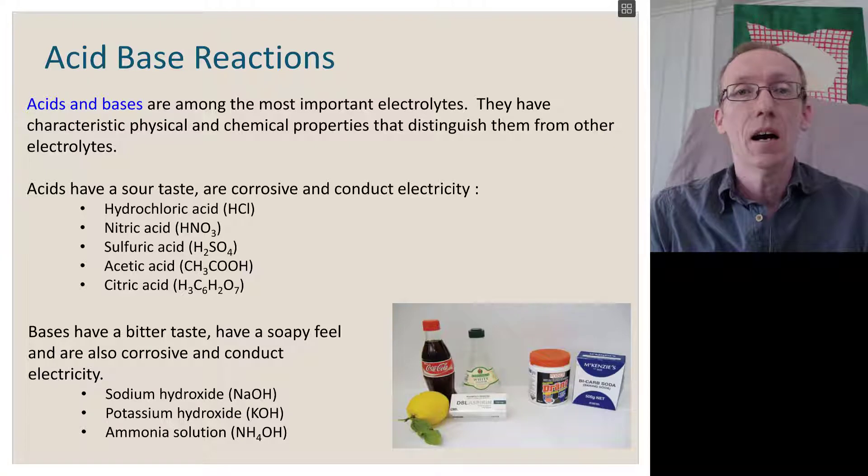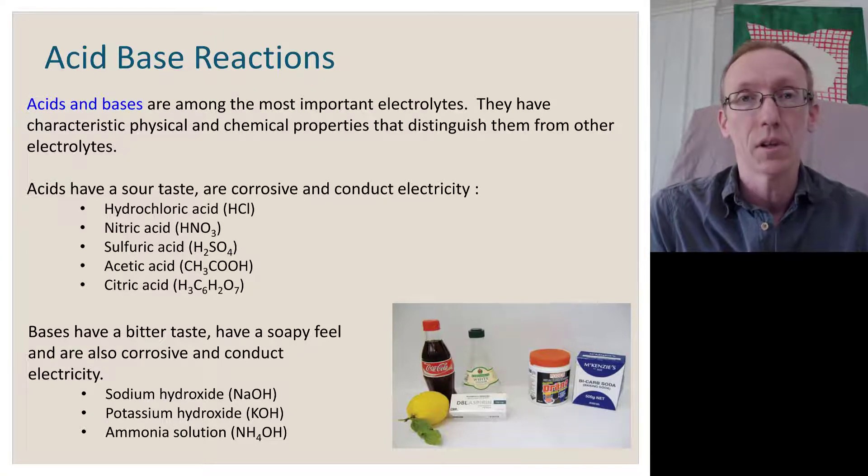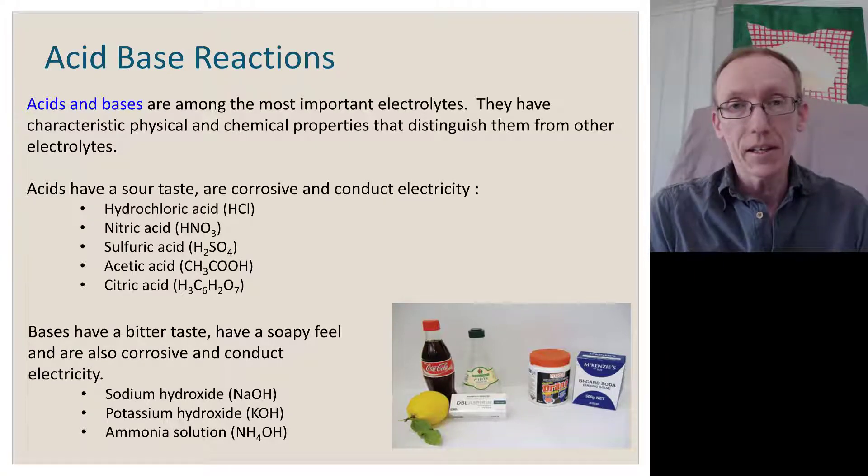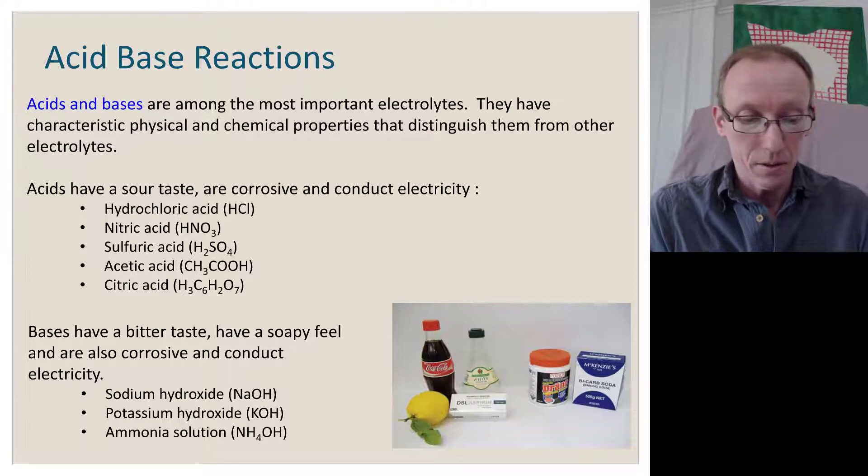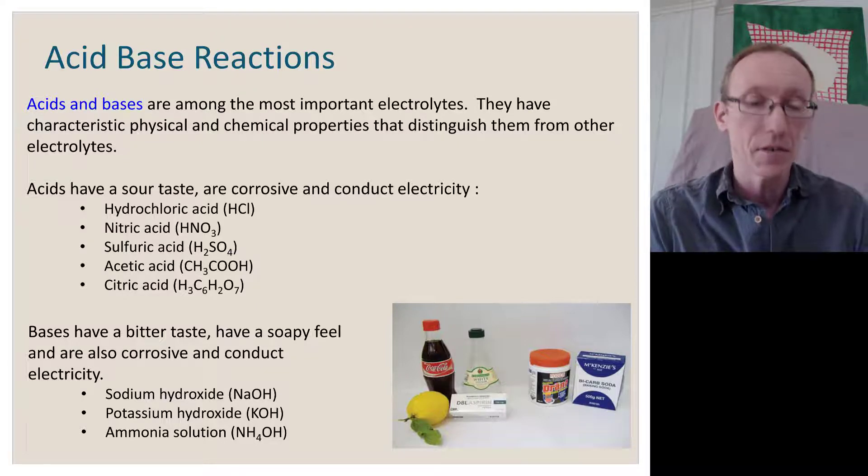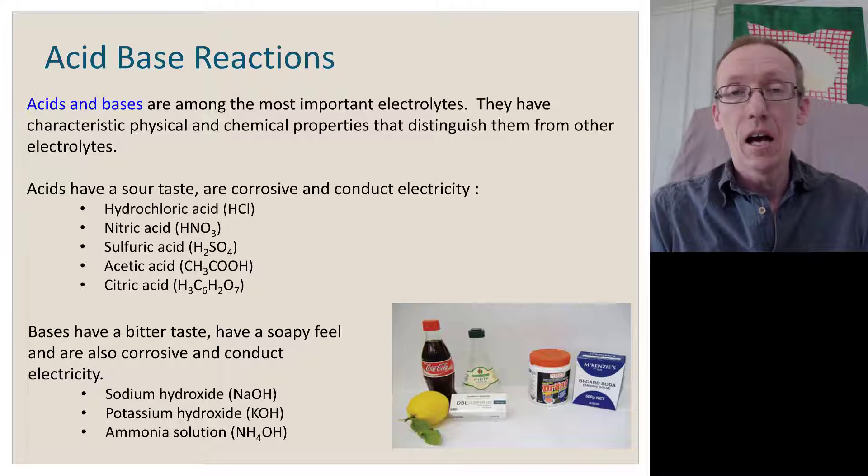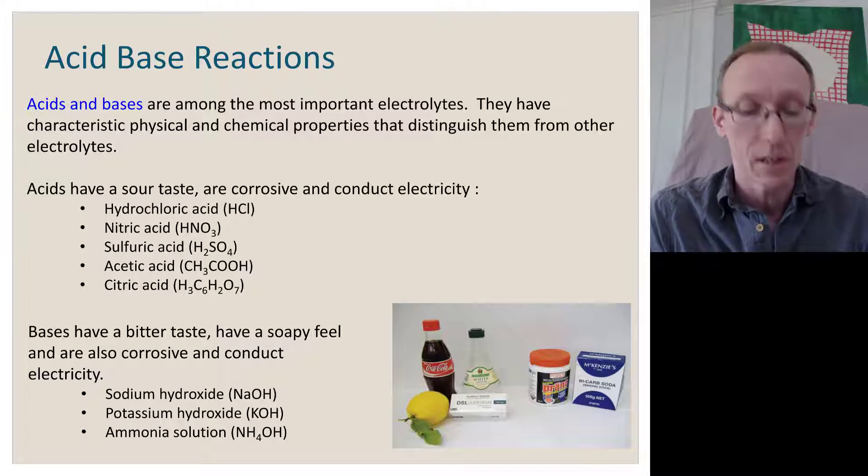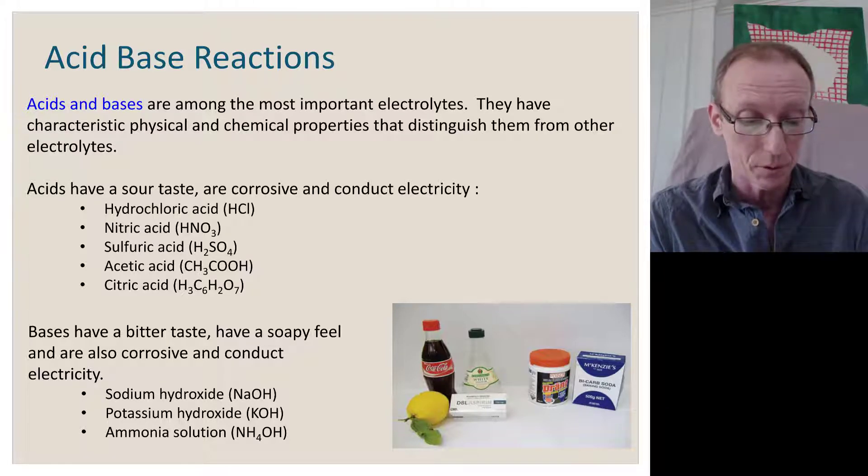Acids and bases are probably the most important of electrolytes, and they're things you come across every day. We know acids are things like hydrochloric acid, nitric acid, sulfuric acid, but also acids prevalent in fruit, vegetables, and other foodstuffs, such as acetic acid from vinegar and citric acid from citrus fruit.